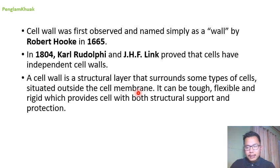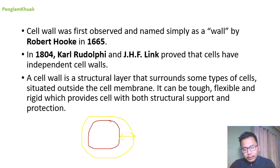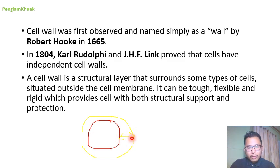The cell wall is situated outside the cell membrane. Let me draw here — this is the cell membrane, and the yellow in color will be the cell wall. We are going to study this layer from yellow to red in color, and discuss what are the components which make up this cell wall — the structural layer that surrounds some types of cells situated outside the cell membrane.